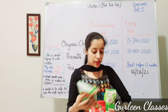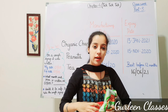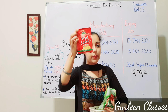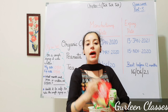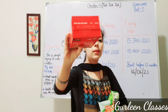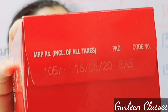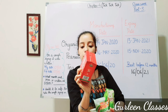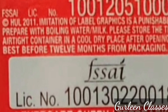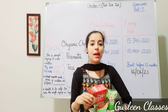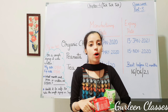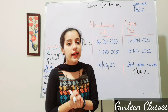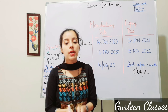The third item I purchased is Red Label tea. The manufacturing date is 16th June 2020 and the best before is written as 12 months. Now let us review all three items I purchased from the grocery store.